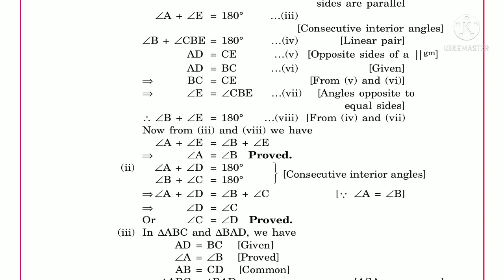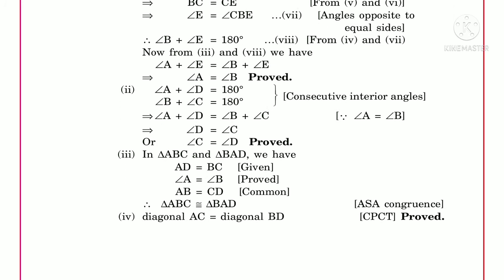Similarly, angle A plus angle D equals 180 degrees and angle B plus angle C equals 180 degrees; comparing these gives angle C equals angle D. For the third proof, in triangles ABC and BAD: AD equals BC (given), angle A equals angle B (already proved), and AB is common. By the Side-Angle-Side congruence rule these two triangles are congruent, and by CPCT diagonal AC equals diagonal BD.